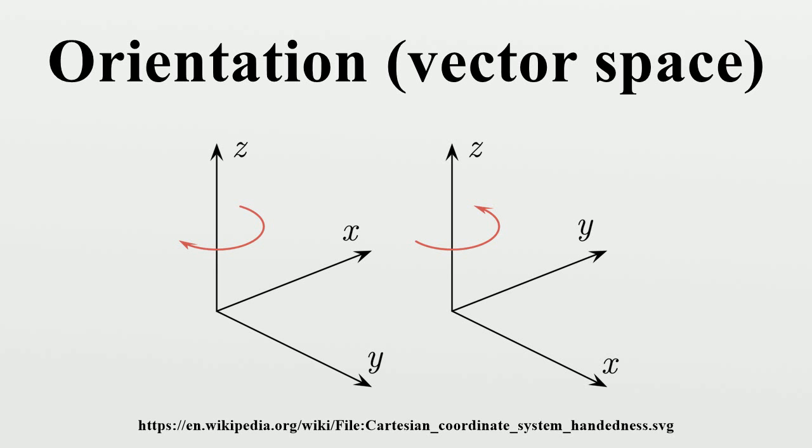Geometric Algebra: The various objects of geometric algebra are charged with three attributes or features: attitude, orientation, and magnitude. For example, a vector has an attitude given by a straight line parallel to it, an orientation given by its sense, and a magnitude given by its length.